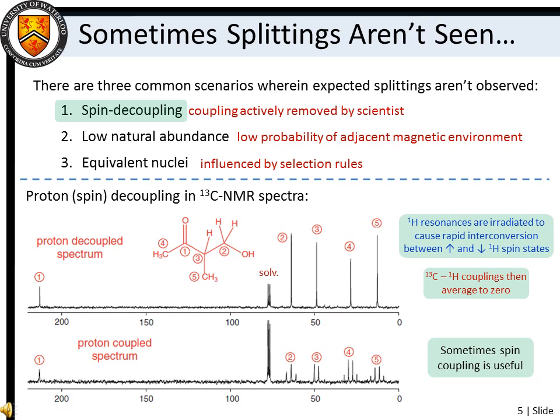NMR splitting patterns provide an excellent means of deducing molecular structure. Be aware, though, that sometimes splittings are not observed when they might otherwise be expected. In spin-decoupled spectra, nuclear spin couplings are removed by irradiating the sample so as to average adjacent magnetic environments to zero. Proton decoupling is often employed in carbon-13 NMR to simplify spectra.